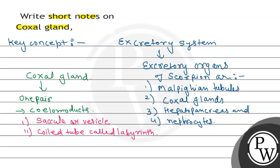The saccule and labyrinth of each coxial gland collect excretory nitrogenous waste from the blood and pass them outside through the excretory pore. Hope you understood it well, best of luck.